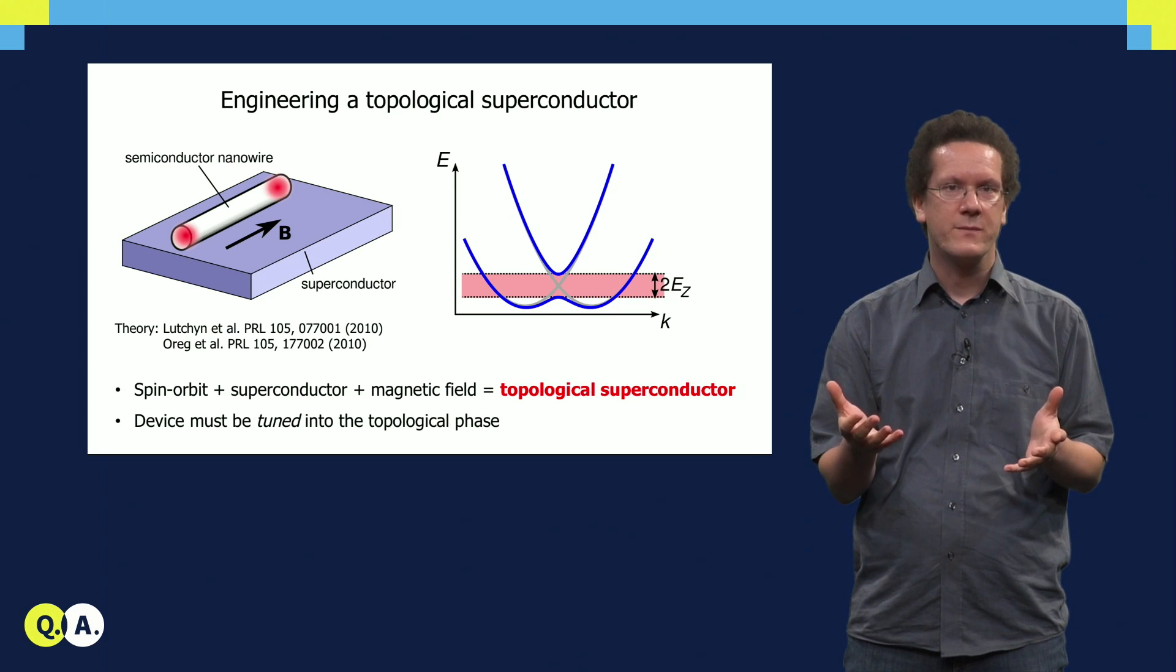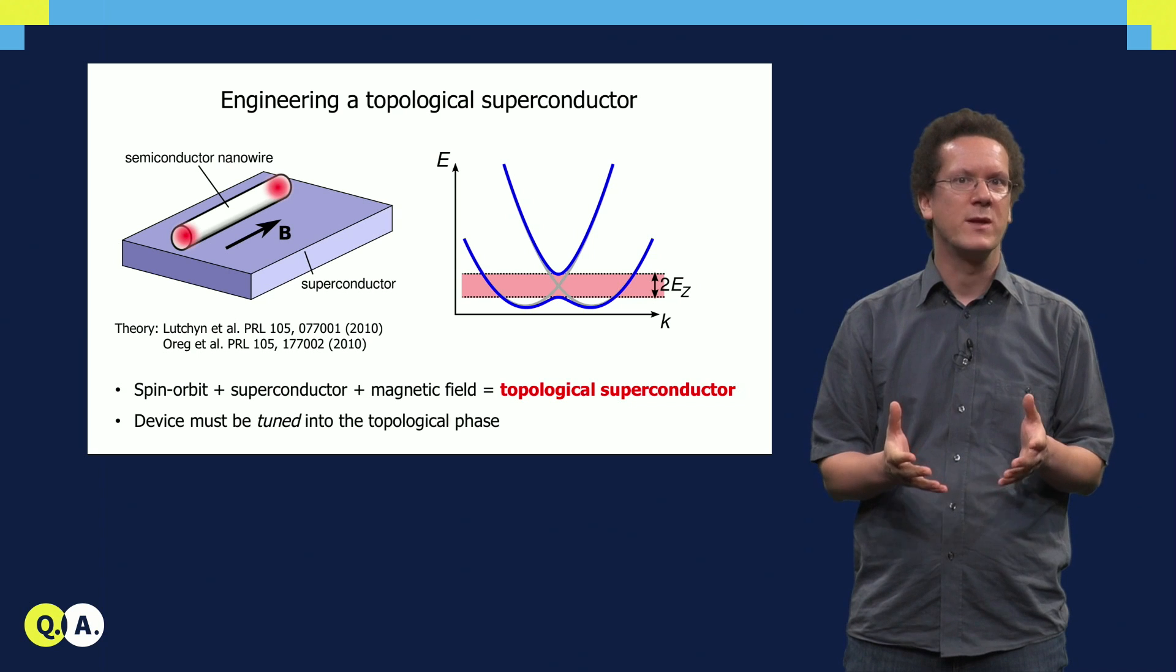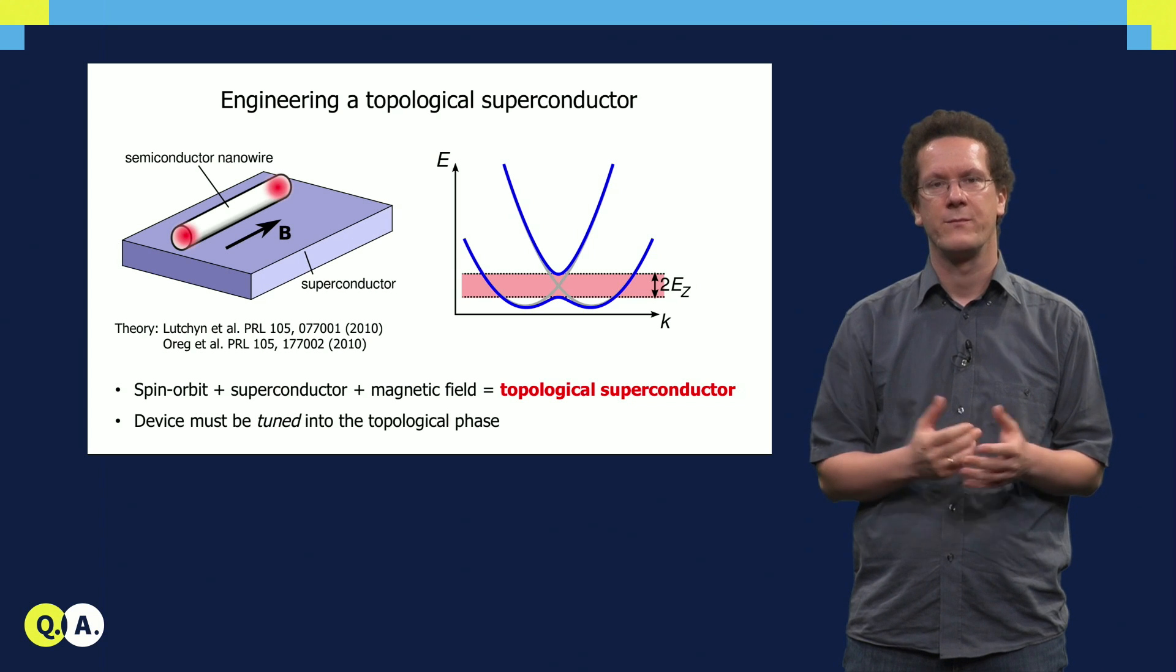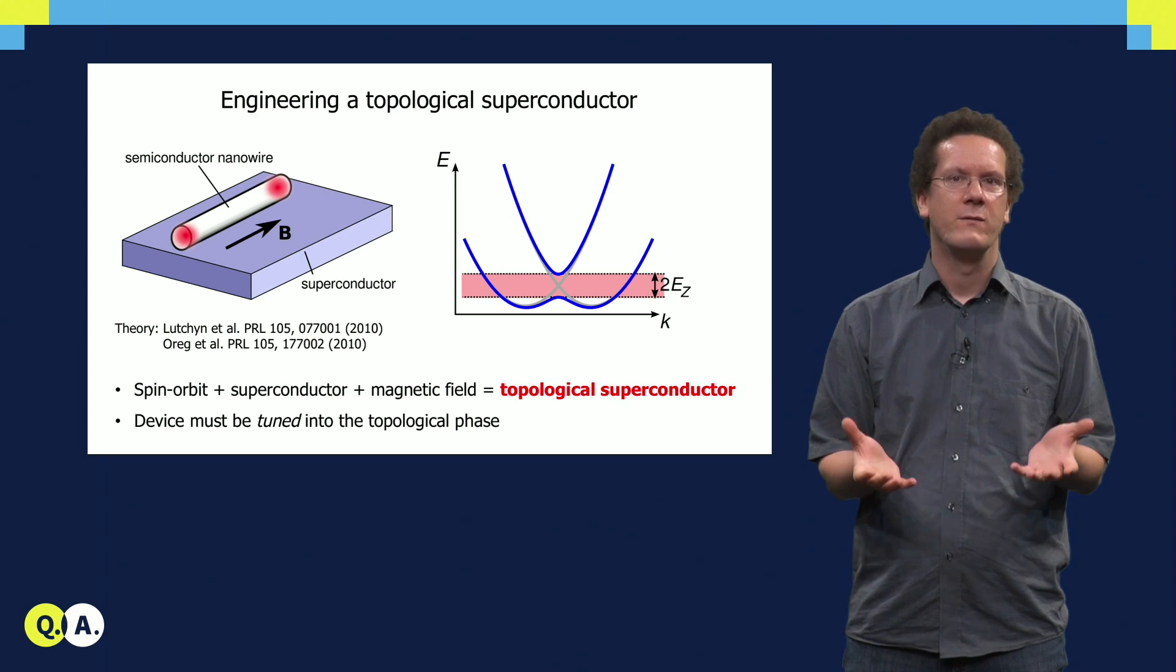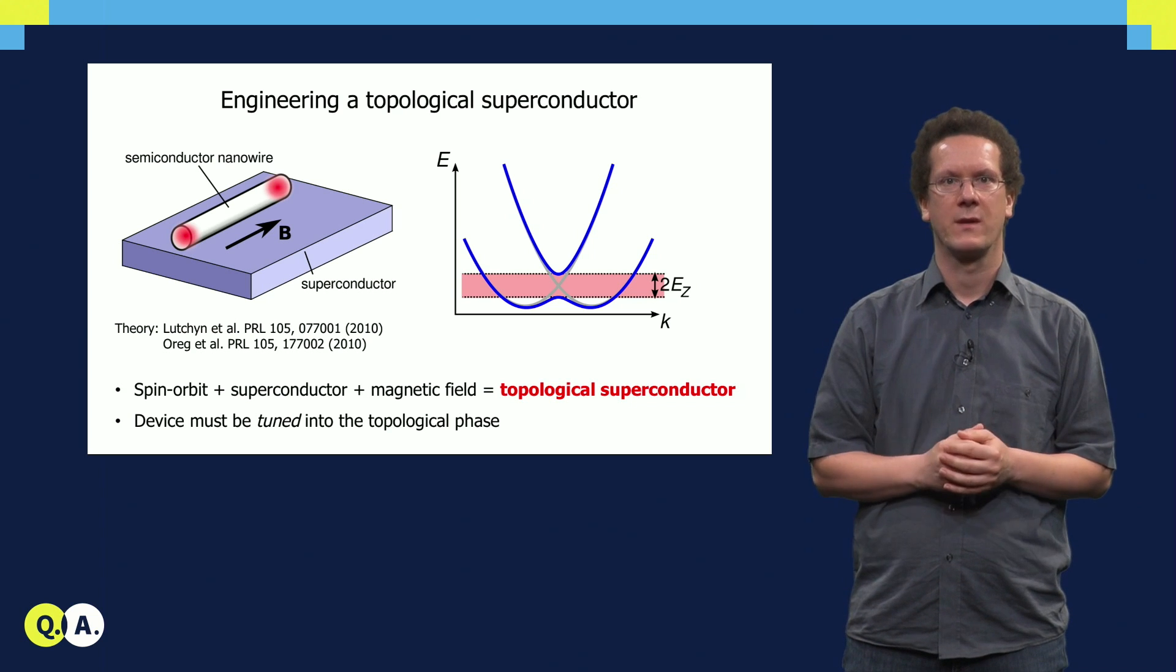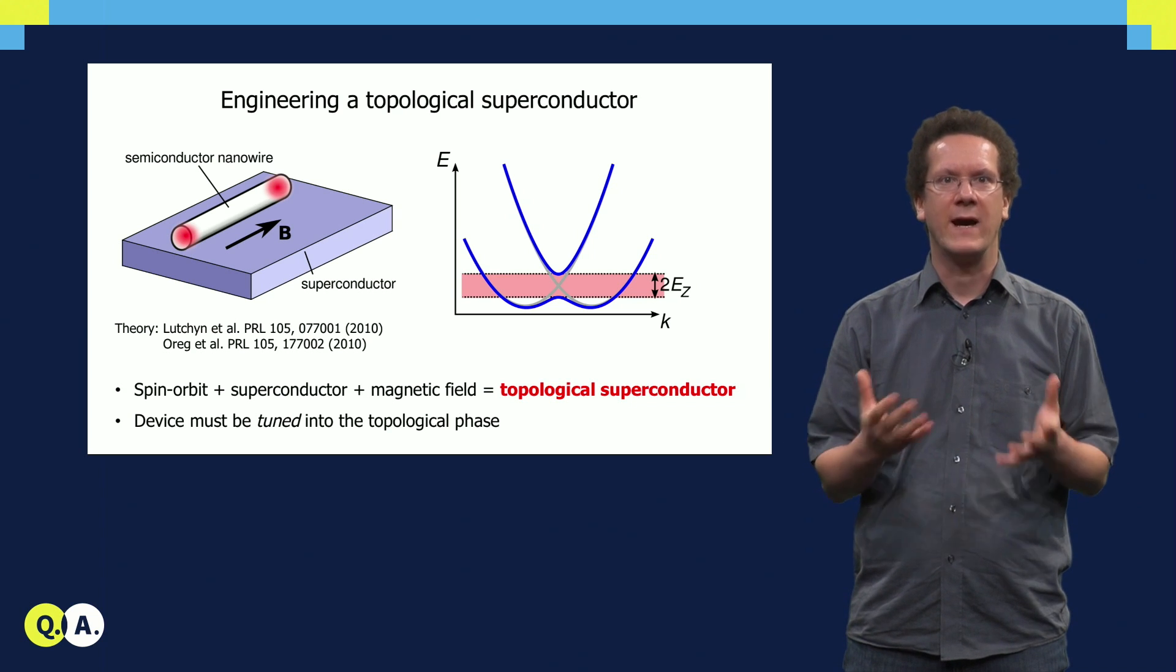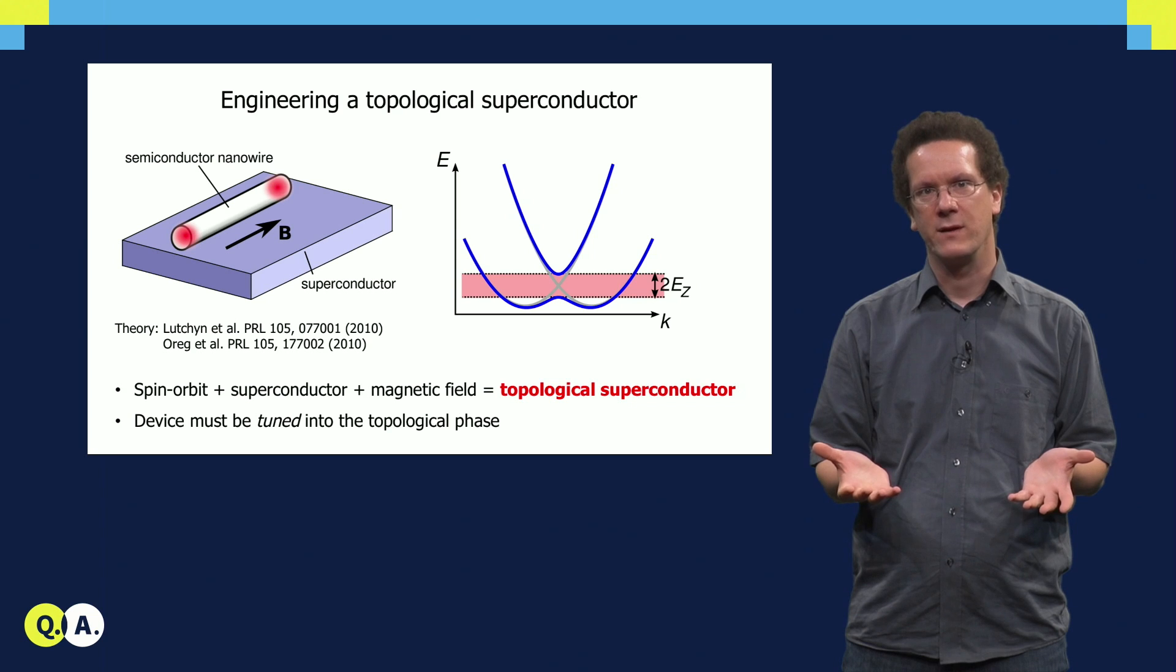In particular, in this case we need to tune the magnetic field so that the Zeeman splitting exceeds the superconducting gap. Additionally, we also have to tune the chemical potential into the Zeeman gap. If we can do this, for example with a gate, the Majorana bound states will appear at the right gate settings and magnetic field.